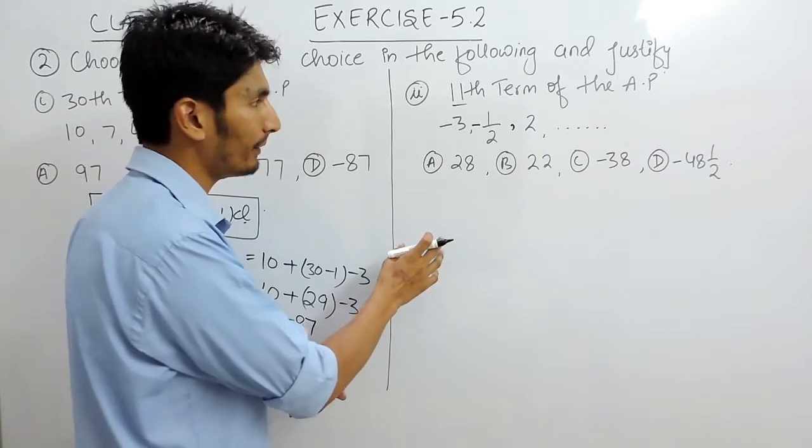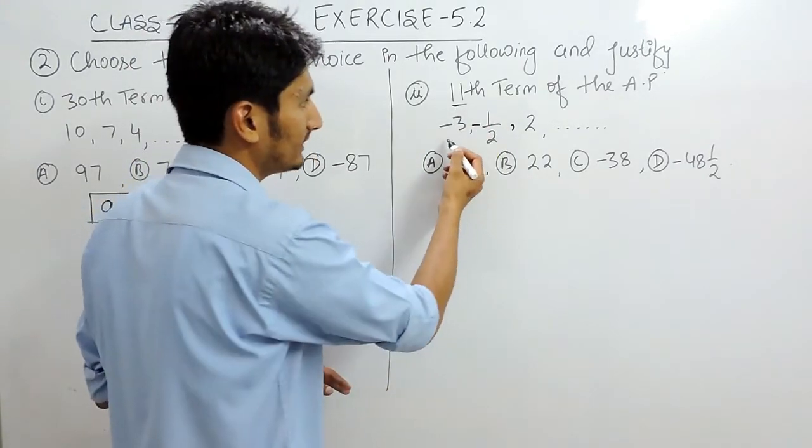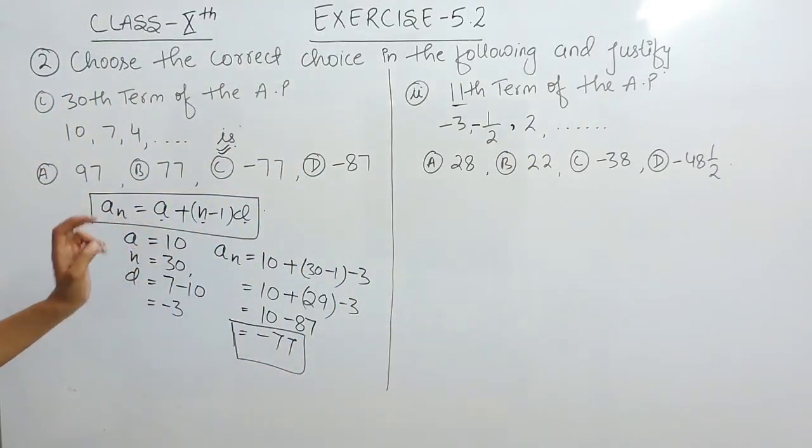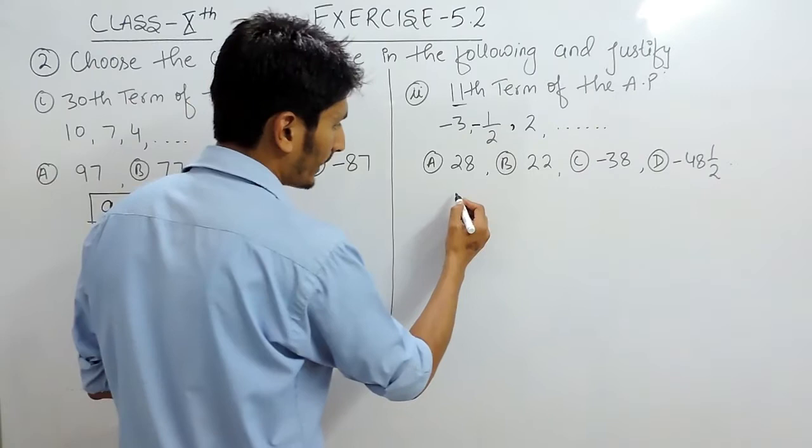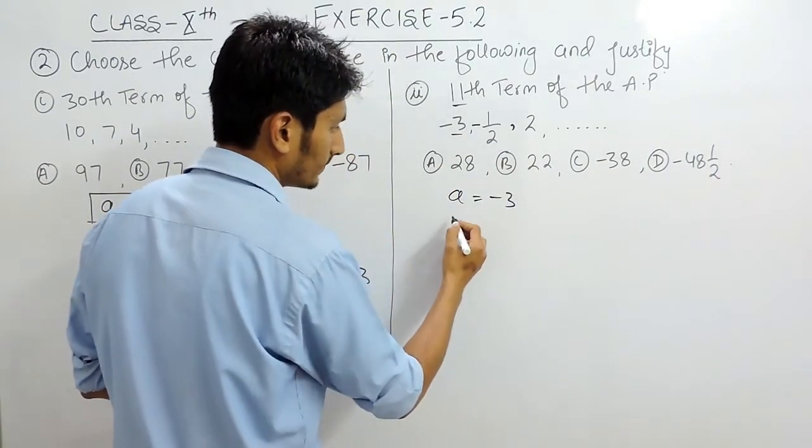Similarly, in the second part also, you have to find the 11th term of an AP. For that, we can use the same formula. For that, we would be requiring the first term, which is -3.